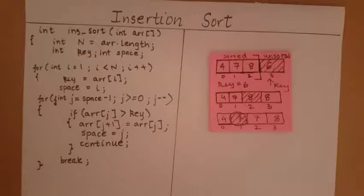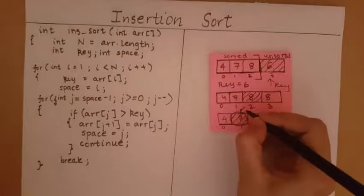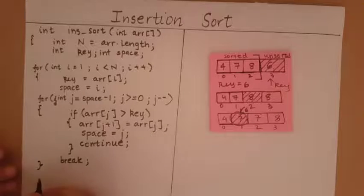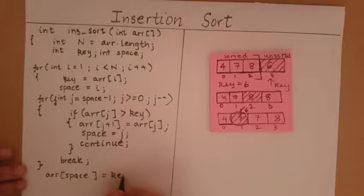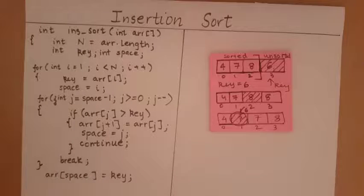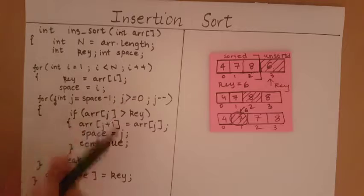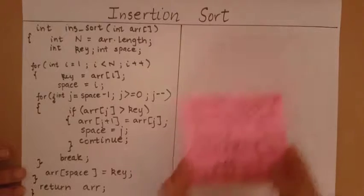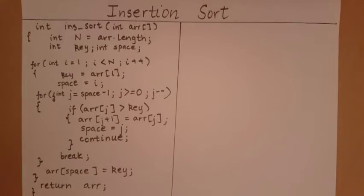Now I have the correct position of my space. The last step is to put the key into the space I have created, so I say array[space] equals key. After we finish this loop, the space has come to the correct position and I add my key to the correct index. With this I have finished placing one element into the correct position. I do this for all the elements in the unsorted array. Once my loop ends I have sorted the entire array and now I can return the sorted array. This is how you write a program for insertion sort.